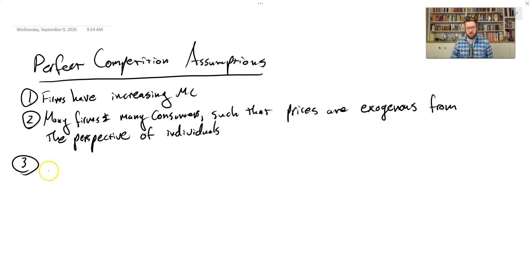The third assumption is that firms produce identical goods, which means that the only thing people care about is the price and that we can add all of their goods together into just a market quantity. We don't have to worry about the difference between the product firm one sells from two, from three, from four.